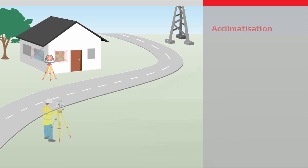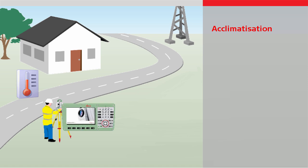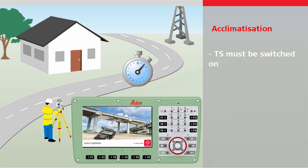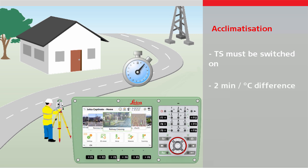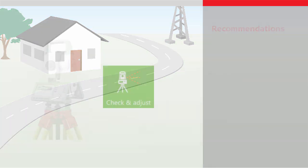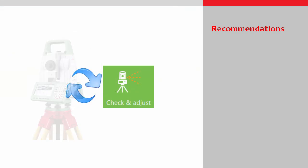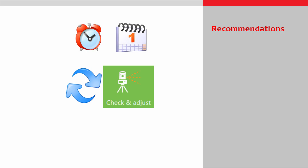Before starting one of the calibration routines, the instrument must be acclimatised to the ambient temperature. The instrument must be switched on and needs approximately two minutes per degree Celsius difference to acclimatise, with at least 15 minutes to minimise a heating-up drift. To guarantee the highest precision during daily work, we recommend calibrating the instrument on a regular basis, every three to six months.